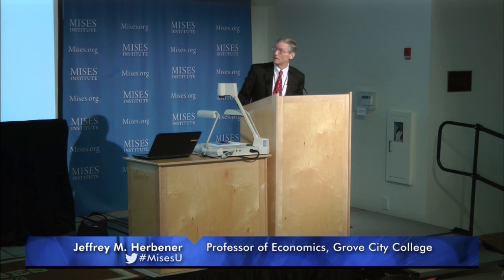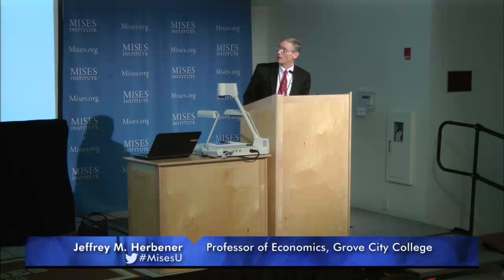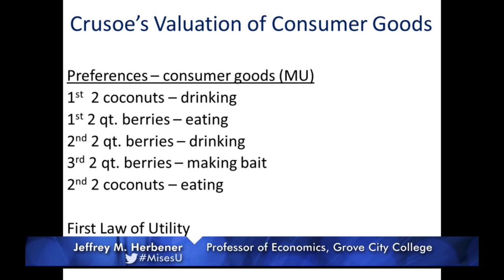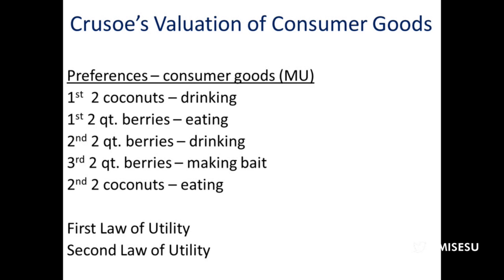Let's suppose we have Caruso on his island. He has two consumer goods available: coconuts and berries. He has producer goods — his labor, coconut trees in various configurations around the island that he can combine his labor with to produce coconuts, and berry bushes also configured in a particular way. He'd find this out by investigating the nature of the island — walking around and seeing the clumps of berry bushes here and there.